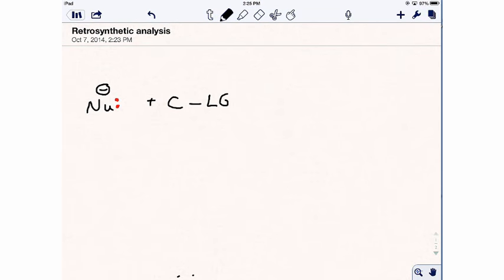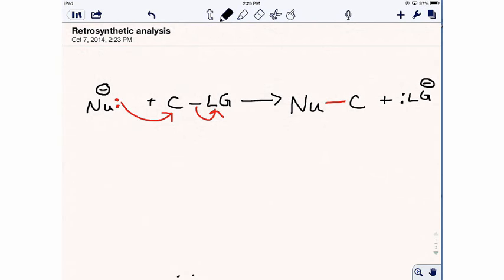Consider an SN2 reaction. A nucleophile reacts with the delta-positive carbon and the leaving group leaves. This generates a new nucleophile to carbon bond.